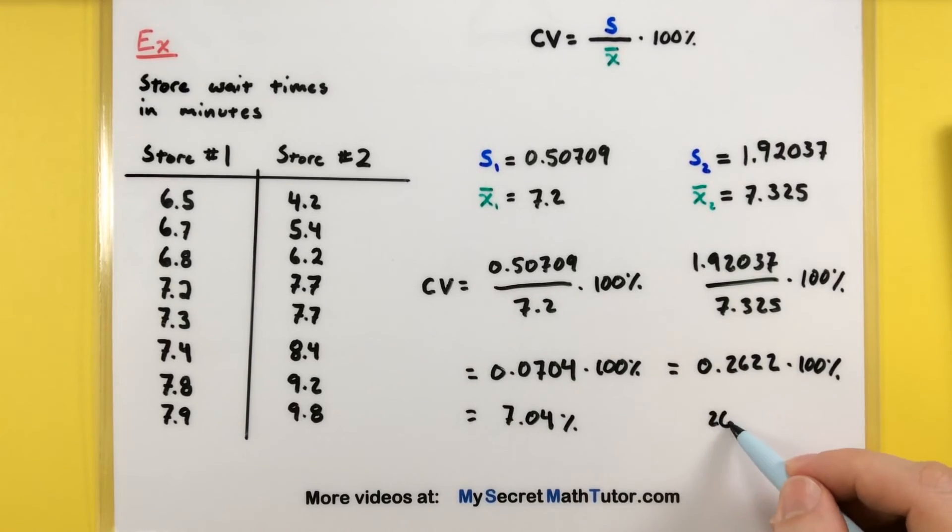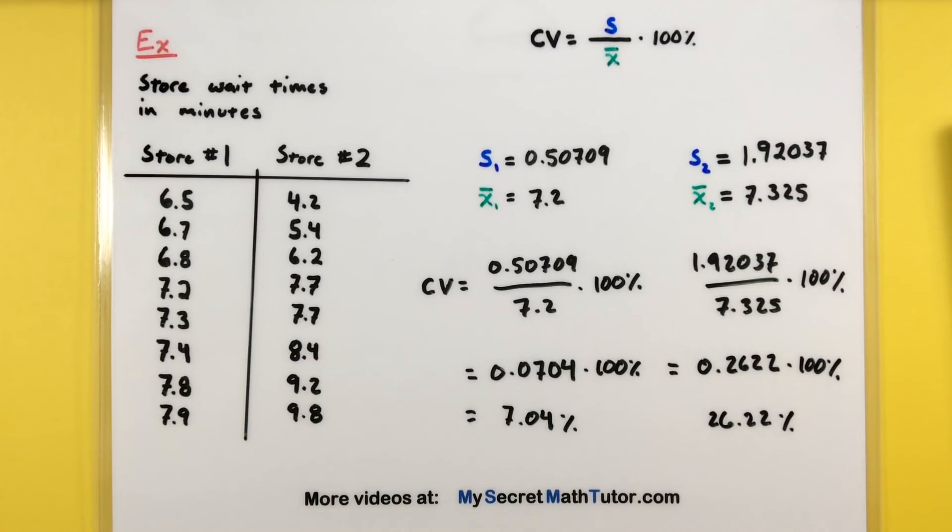So this first one will get 7.04%. And the other one we get about 26.22%. So now we have the coefficient of variation for each of them.